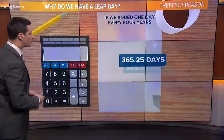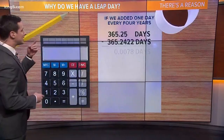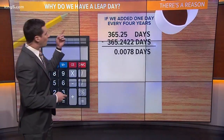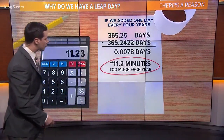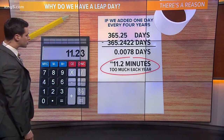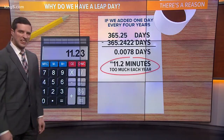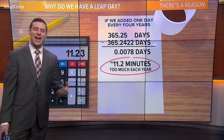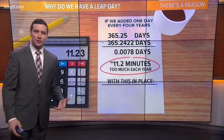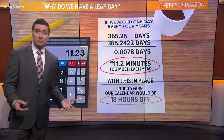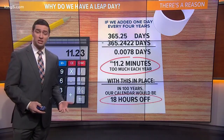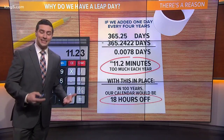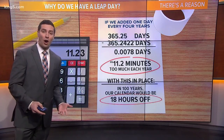Not quite. There still is one more thing that we can do. If we added one day for every four years, our new calculation shows the calendar is still off by about 11 minutes every single year. So with this in place, in 100 years our calendars would still be 18 hours off.